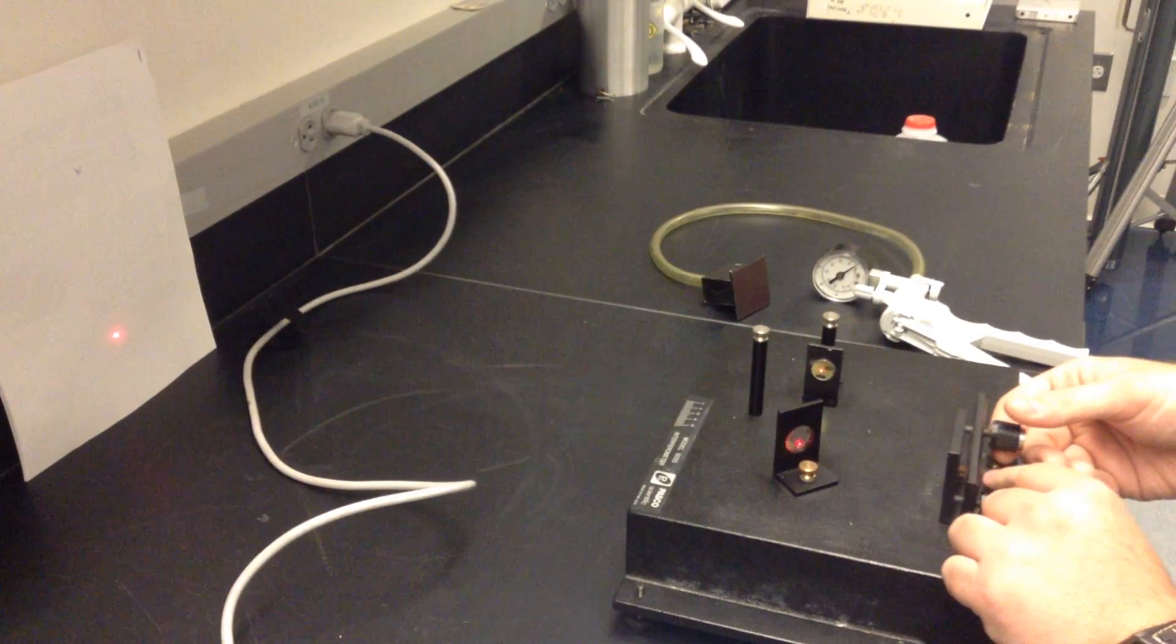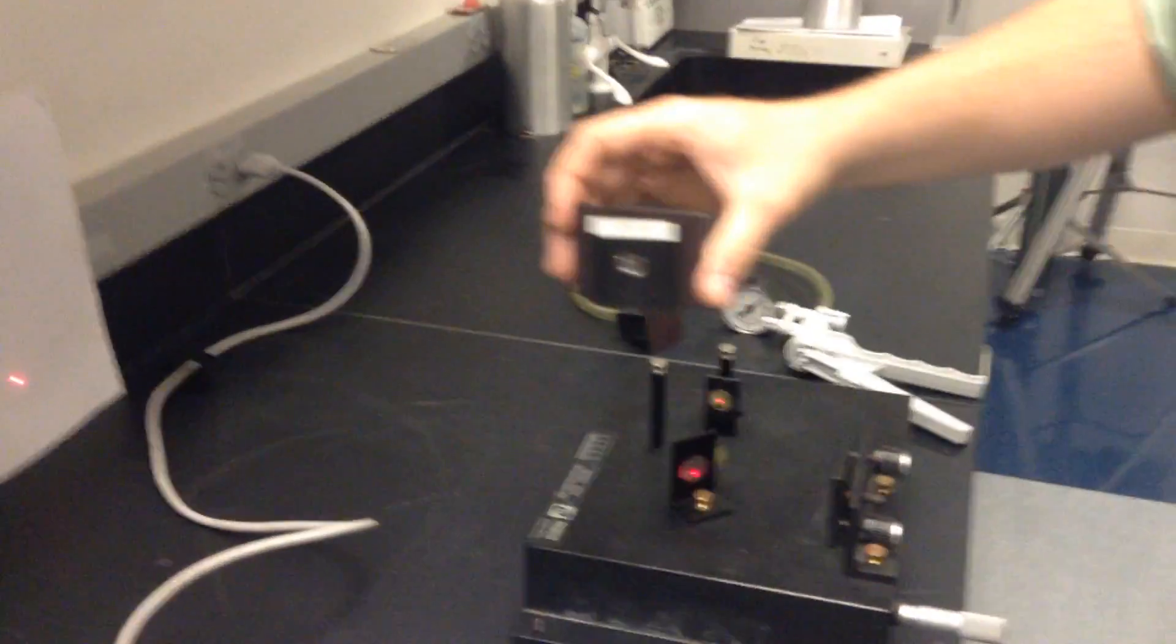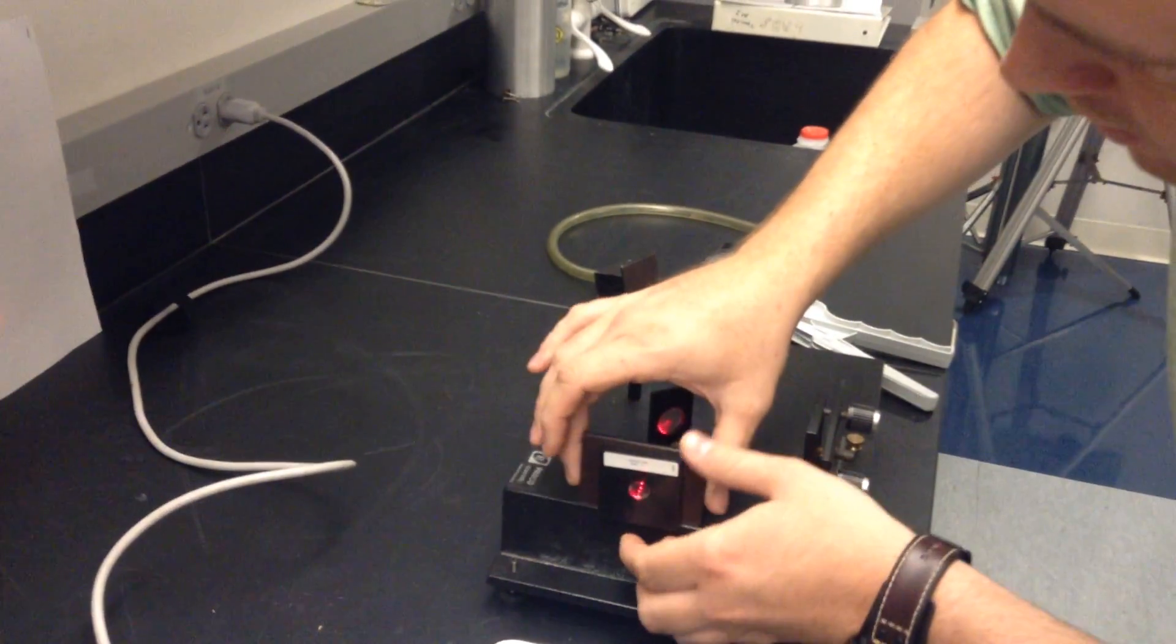You'll see a little sparkling. I don't know if you can pick that up on the camera. When you have them pretty much at the right spot, then what you're going to need to do is put a beam expander in front of the light that's hitting the beam splitter.